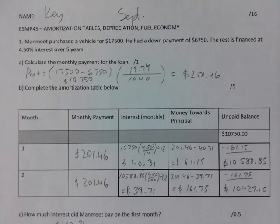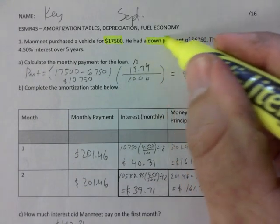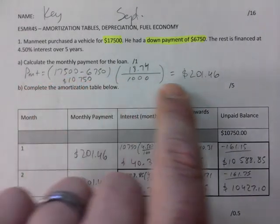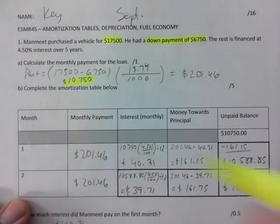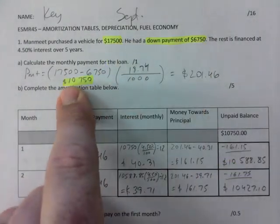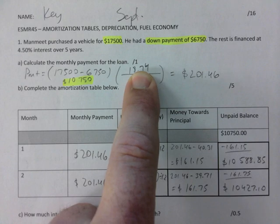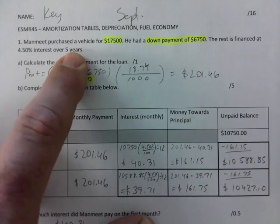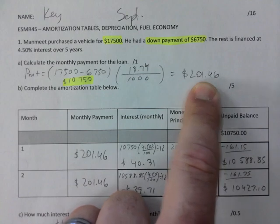When purchasing a vehicle, there's a down payment and the rest is financed. You need to use the loan payment formula. After the down payment, this is how much you end up borrowing. You need to get the table rate — make sure it's not the interest rate in your formula. Match 4.5% over five years, divide by a thousand, and there's your monthly payment.